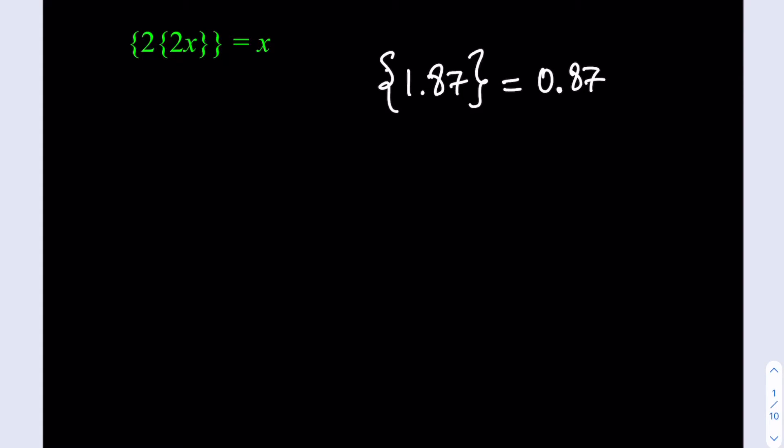We have the fractional part of 2 times the fractional part of 2x being equal to x, and we're supposed to solve for x.